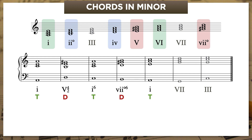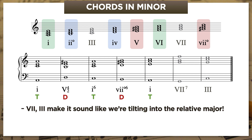You might have noticed something curious there. If you didn't, let's try again — but now I'll make the subtonic chord a VII-V instead. I'm willing to bet that if you listened carefully, those last two chords didn't sound like they were even in A minor at all. They sounded like V7 going to I in C major. And that's the caveat.